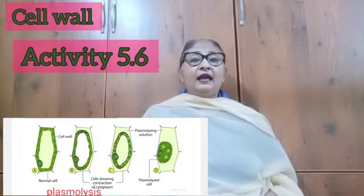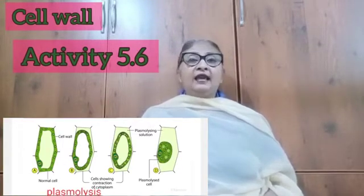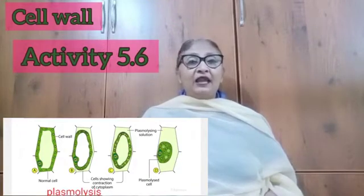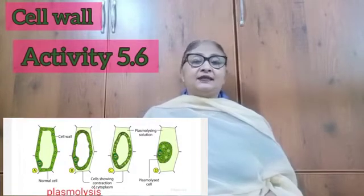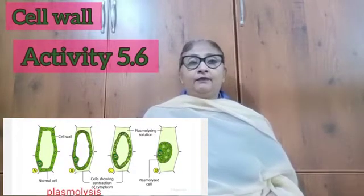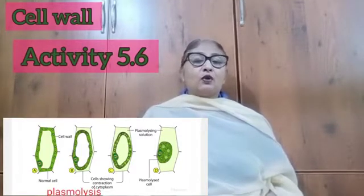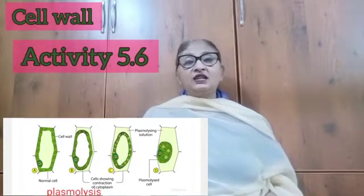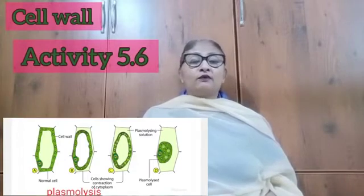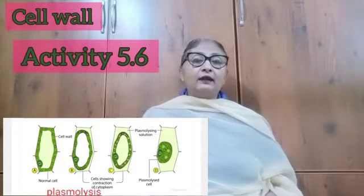Now we take another real leaf and boil it, and then take the epidermal peel from this boiled leaf and perform the same steps as we did in the beginning. Finally, view it under the microscope. We will see that there is no change in the shape of the cells. This proves that osmosis occurs only in living cells and not in dead cells.